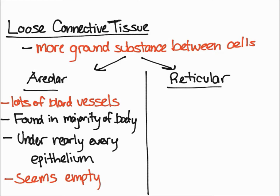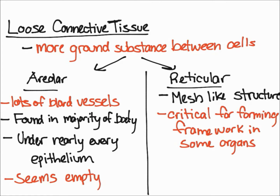Next, let's compare it to reticular tissue. Reticular tissue isn't as detailed as areolar tissue, but it essentially forms a mesh-like structure. The mesh consists of reticular fibers and fibroblasts. It's also critical for forming the framework in some organs, such as your lymph nodes, spleen, and bone marrow.